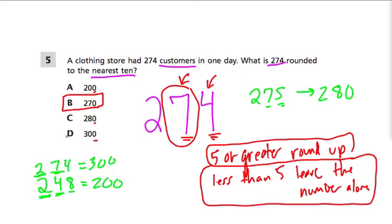So D would be correct if we were rounding up by the 100s. A would be correct if we had a different number and we were rounding to the 100. C would be correct if we had something like 275 or 276 or 277 or 278. Anything where the unit place value or the 1s place right here is 5 or up. But we don't have that. We have B, which is 274.